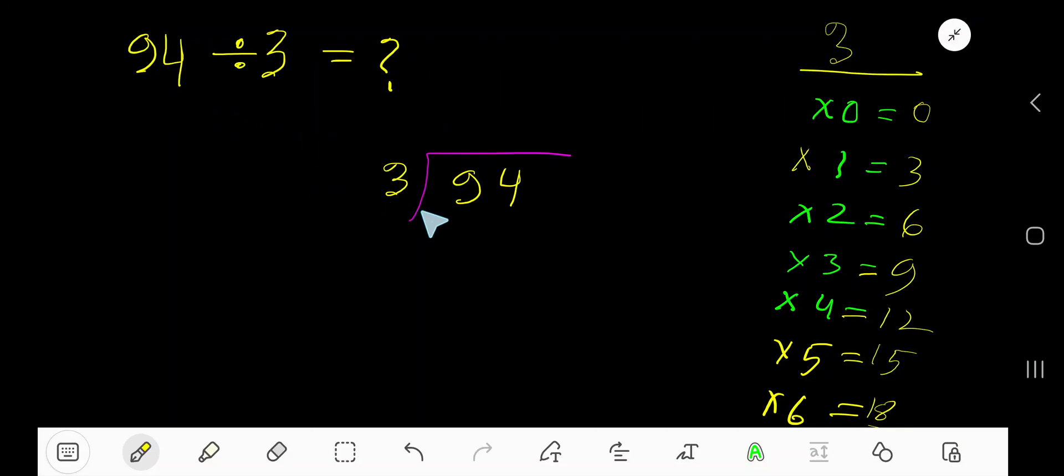94 divided by 3. Here 3 is a divisor, so we need the multiplication table of 3. 3 times 0 is 0, 3 times 1 is 3, 3 times 2 is 6, 3 times 3 is 9, 3 times 4 is 12, 3 times 5 is 15.